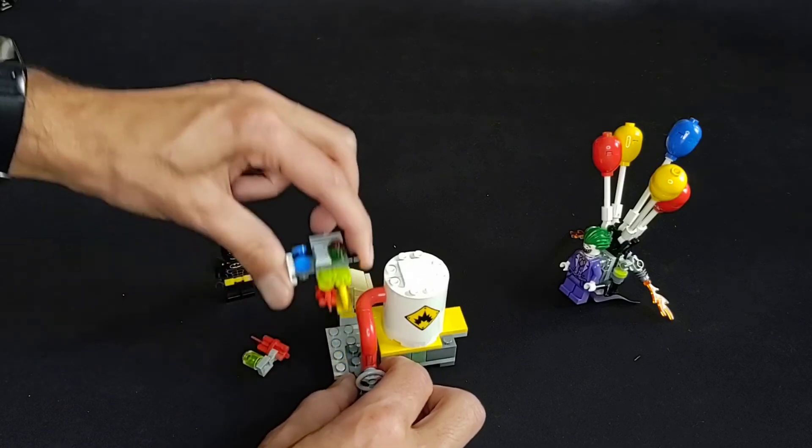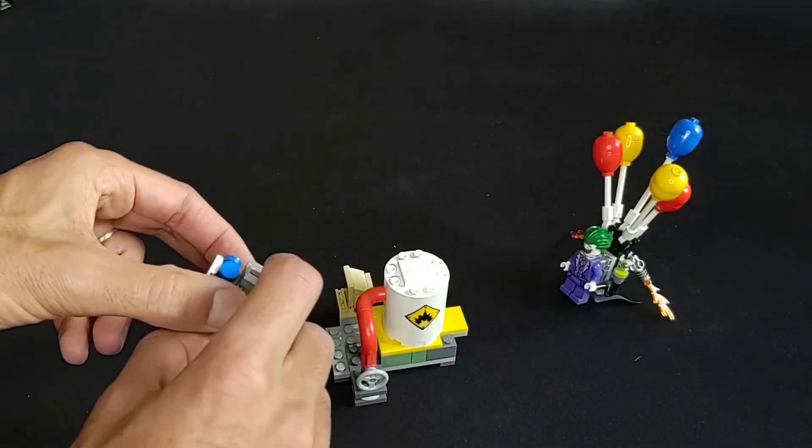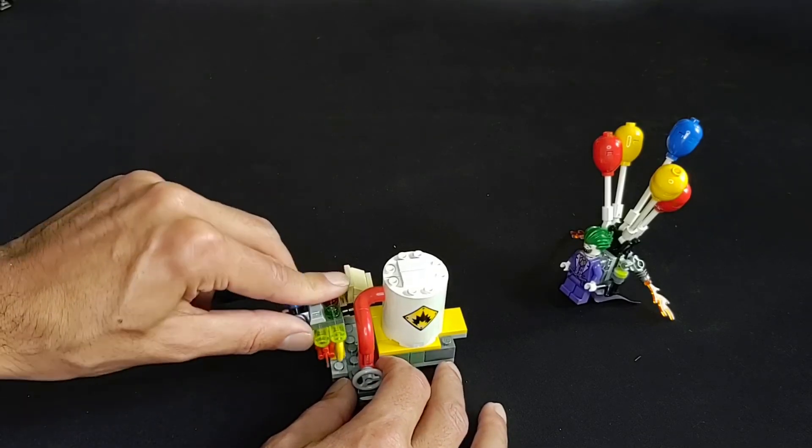You can remove the bomb, of course, and disarm it, which is what Batman does in the movie. Spoiler alert. It's like the first five minutes, so it's not really that much of a spoiler.